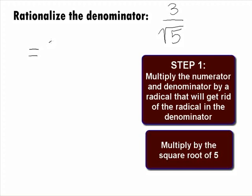To get an equivalent fraction, we need to multiply both the numerator and the denominator by the same square root of 5.